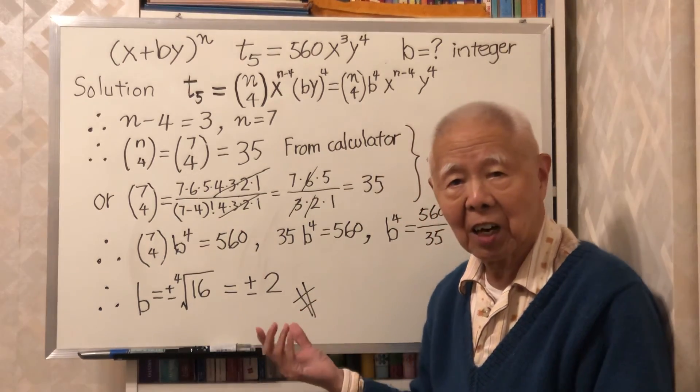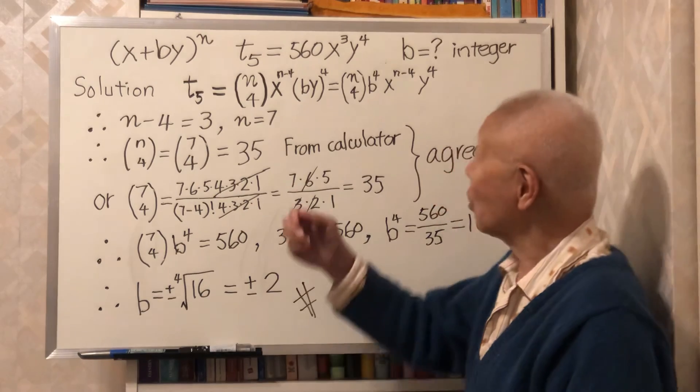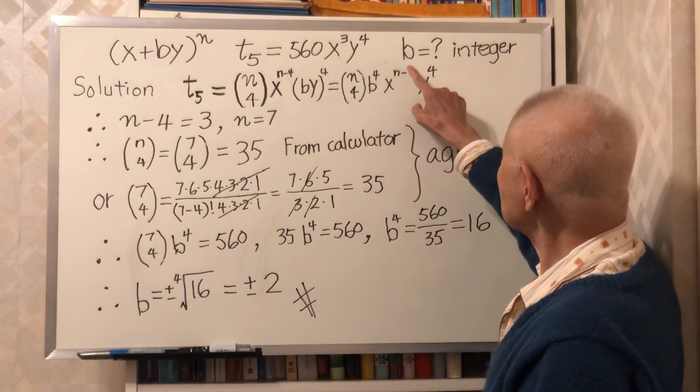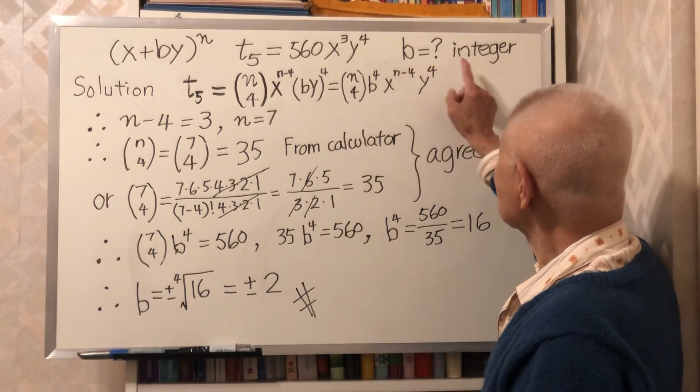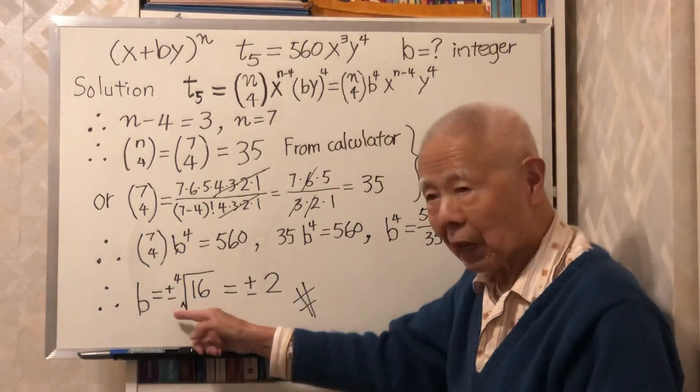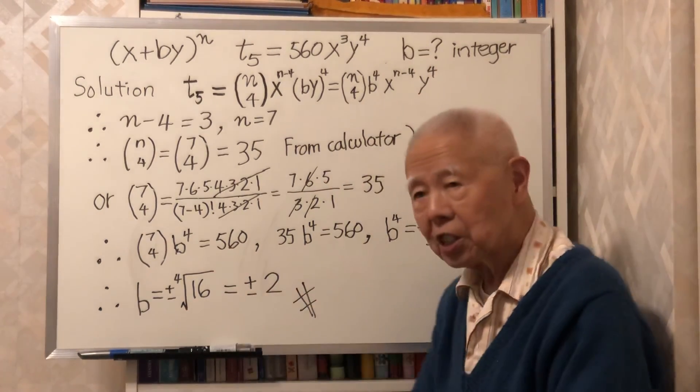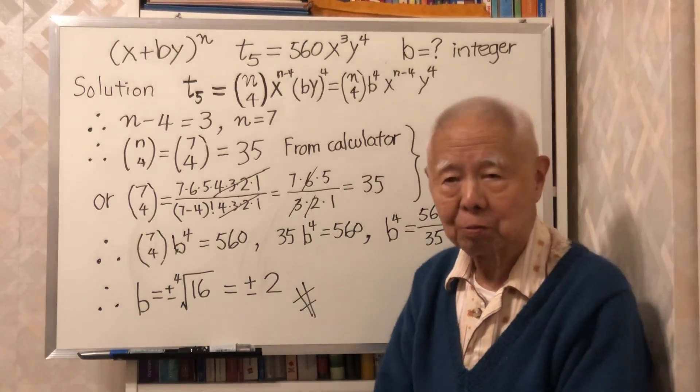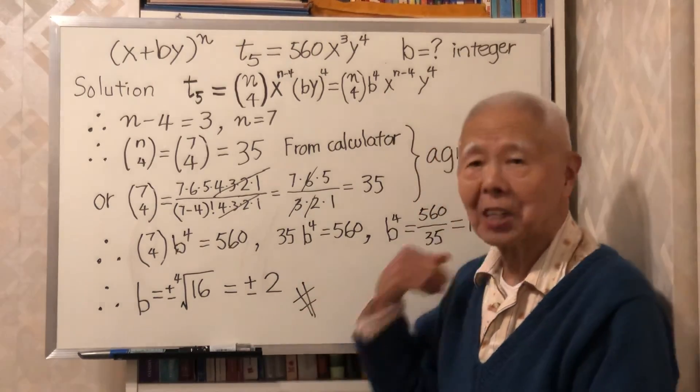So you get the answer now. What is B? B is what integer? You have the answer. B is either plus 2 or minus 2. That's the answer.